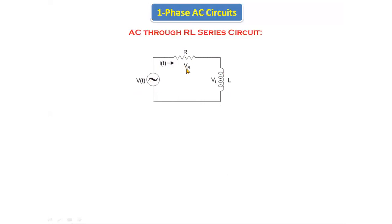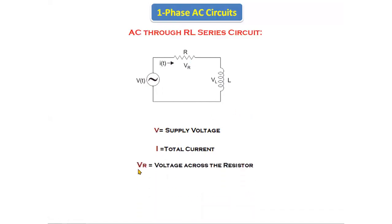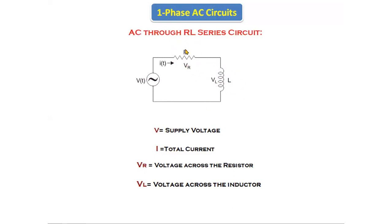For this circuit we are giving AC supply. V is the supply voltage. The voltage across the resistor is given by VR and the voltage across the inductor is given by VL. I is the total current. Since the resistor and inductor are connected in series, the current is the same throughout the circuit, and the voltage divides — the voltage dividing in the resistor is called VR and the voltage dividing in the inductor is called VL.